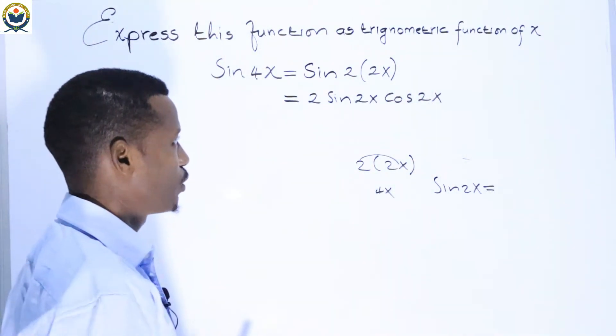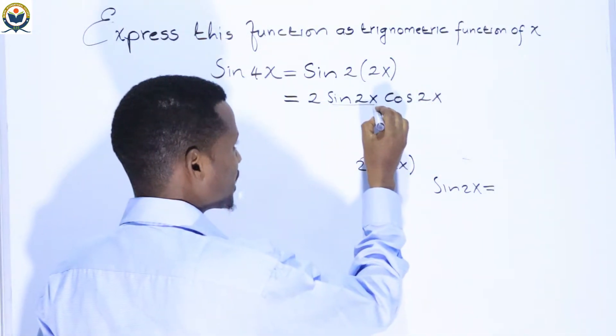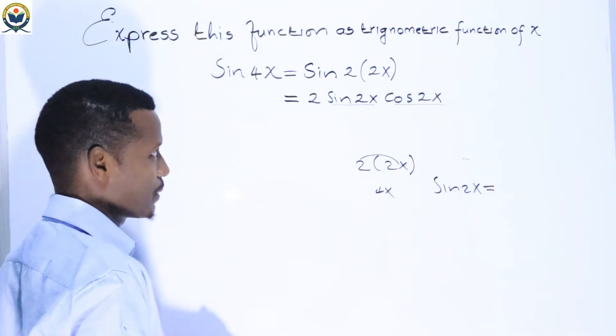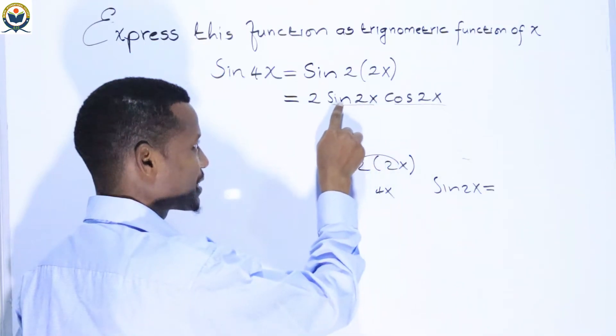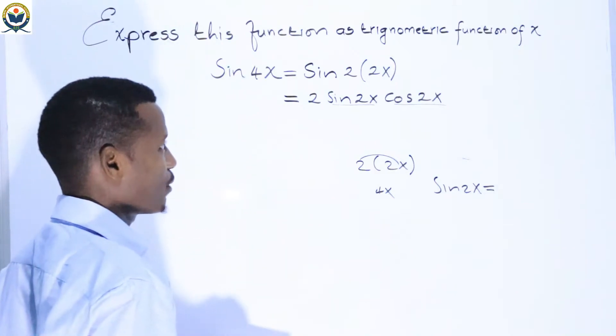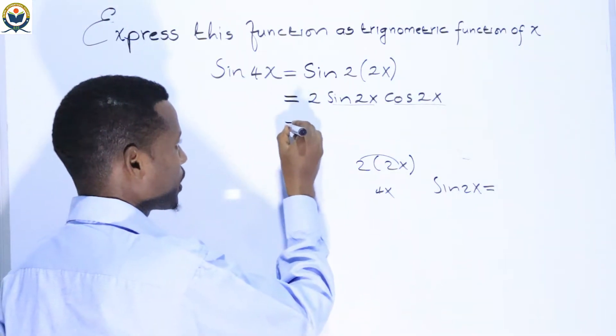Sin(x) multiplied by cos(2x), and sin(2x) multiplied by cos(2x). We can expand cos of double angle, which equals...